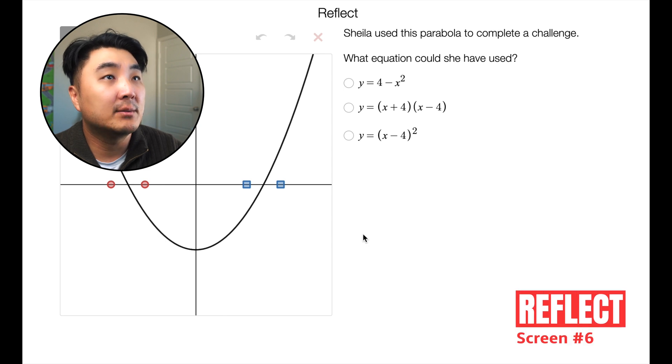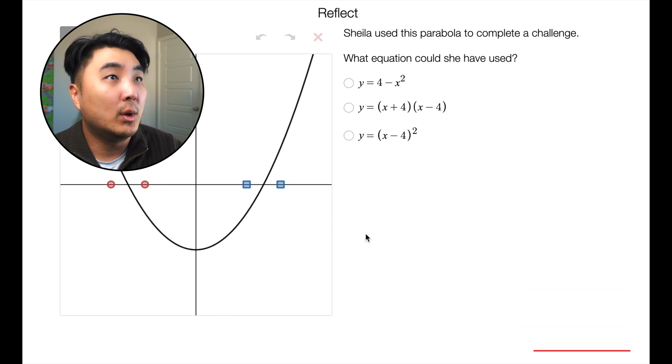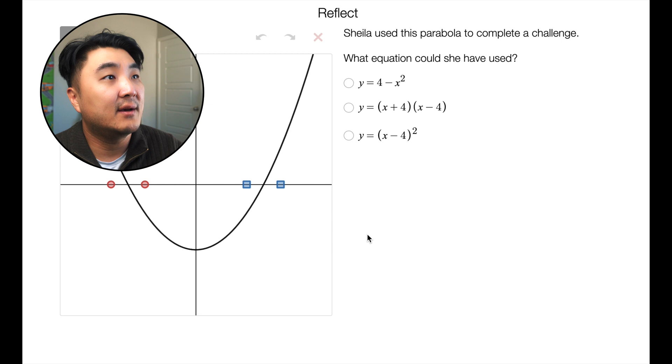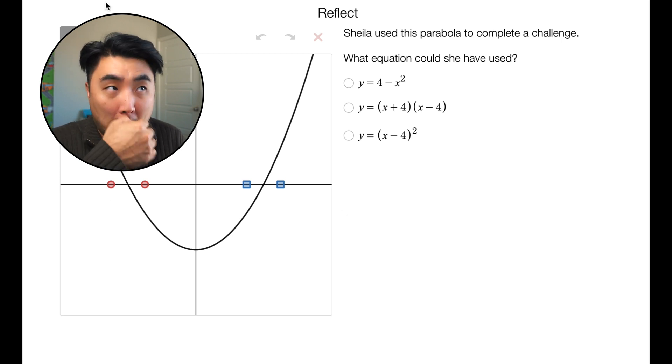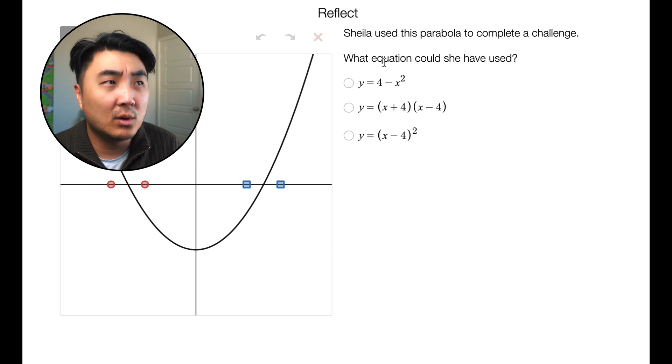Reflect. Sheila used this parabola to complete a challenge. What equation could she have used? Okay, so first of all, let's think about this - the a value, is it going to be positive or negative, right? Positive values open upwards, negative a values open downwards. And so it's opening upwards, so they all have... I just wasted that time talking about a values, but they're all positive, so they all kind of fit in here. So let's talk about your x-intercepts, right?